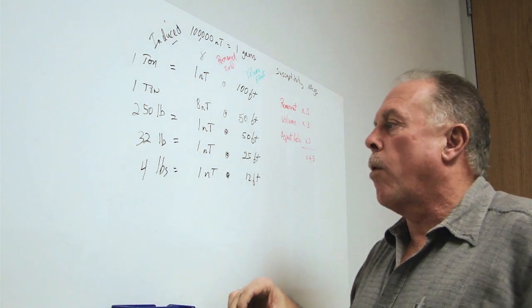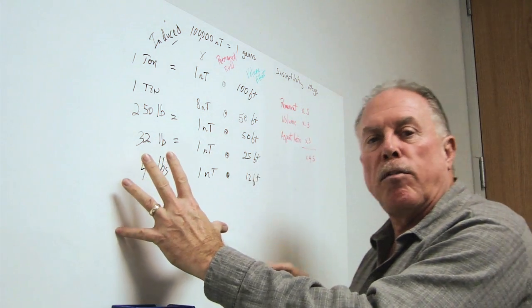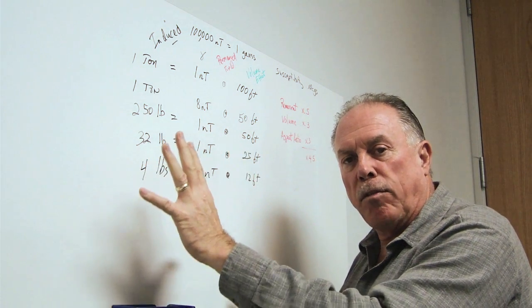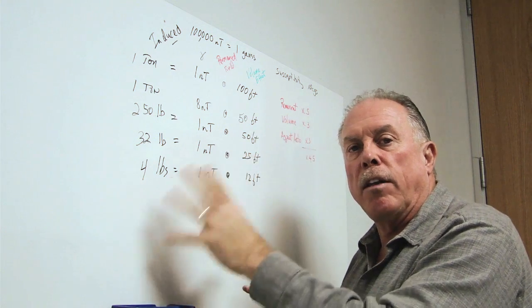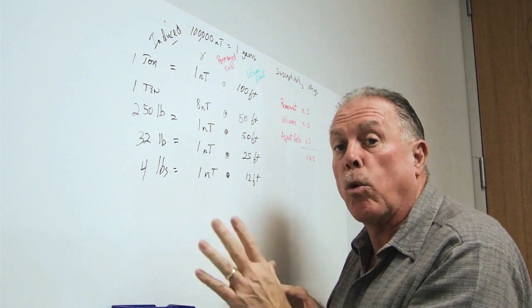Okay, so we have seen that we have induced magnetic field distortions of the earth's magnetic field that give us the ability to see small objects at great distances with a total field magnetometer.